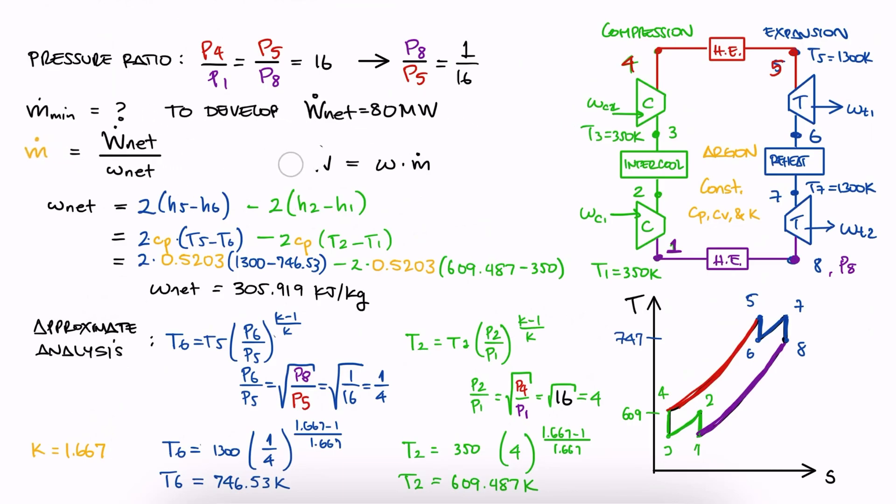And finally, we substitute the net-specific work we just found and the given net-power output in our mass flow rate expression to find the value of the mass flow rate.